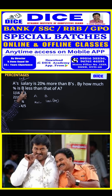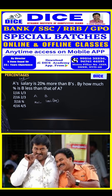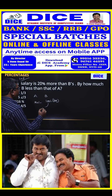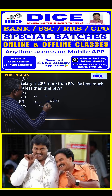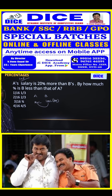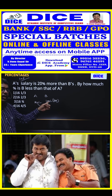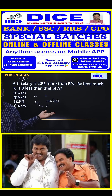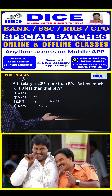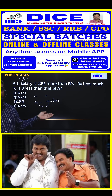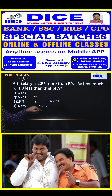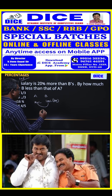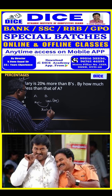By how much percent is B less than that of A? Comparing B to A — B is 20 rupees less than A. A is at 120 rupees, so we compare B relative to A.